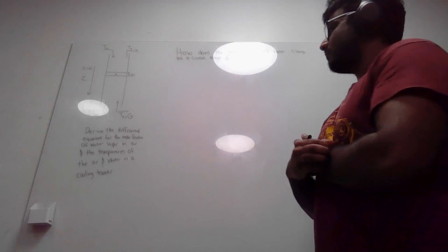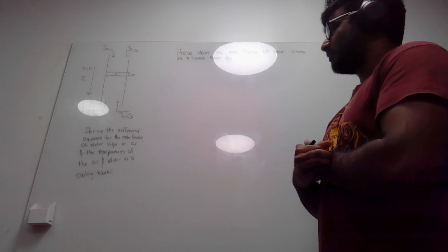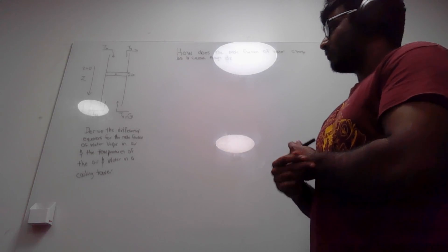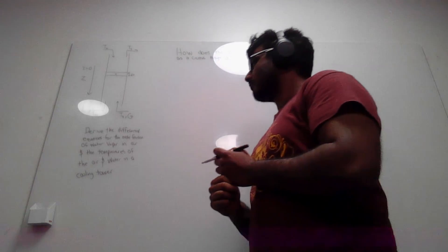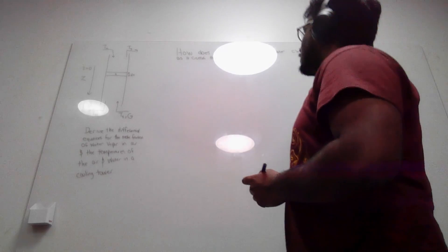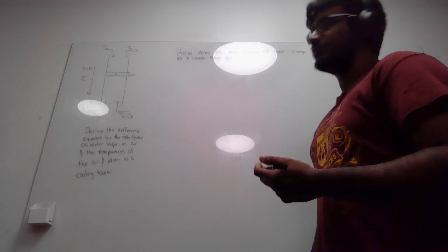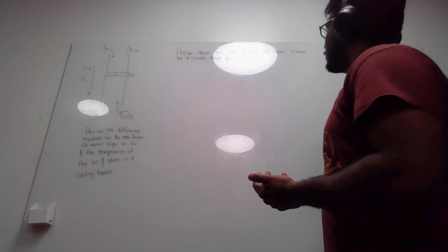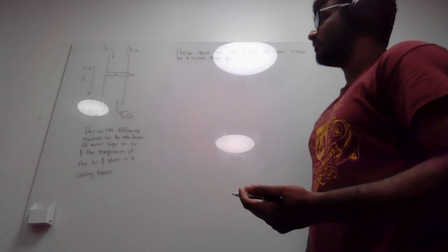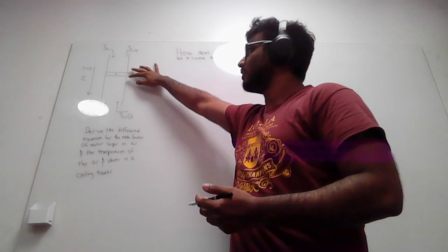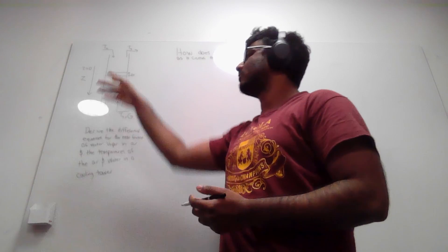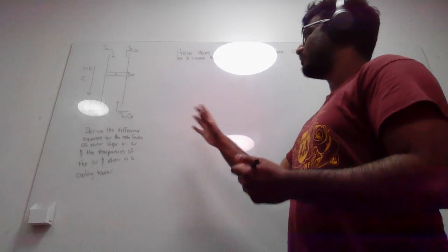The first part of the question asks us to derive the differential equation for the mole fraction of water vapor in air. To do that, we ask ourselves: how does the mole fraction of water change as it crosses through dz? And dz is where our packing material is, with lowercase a representing the specific area for dz.